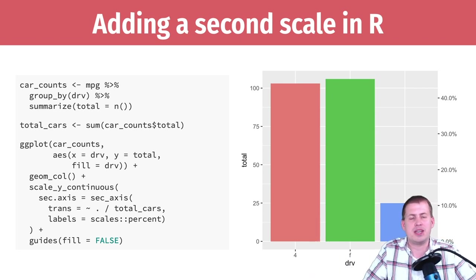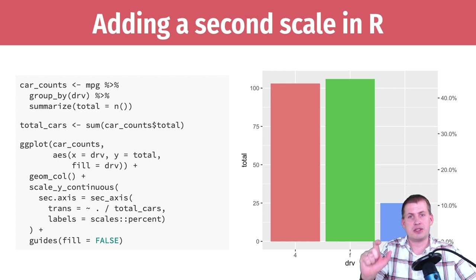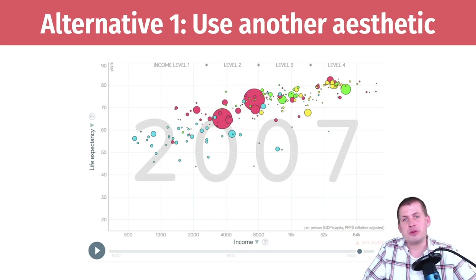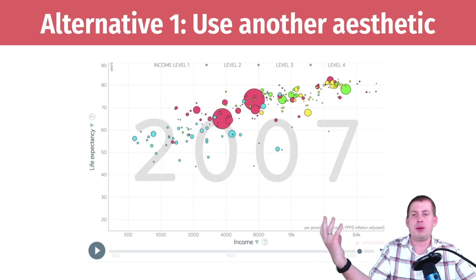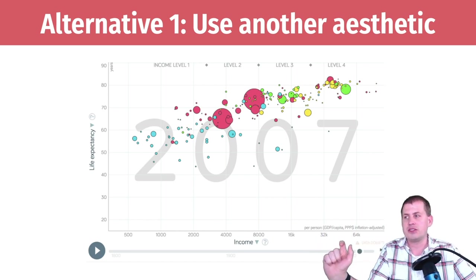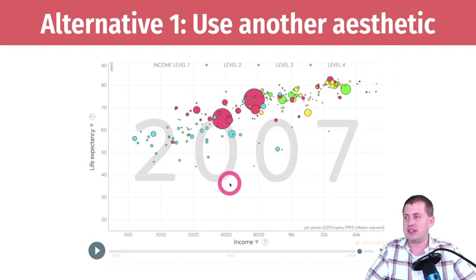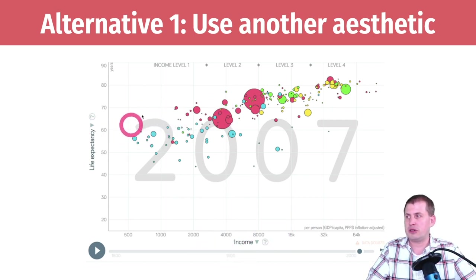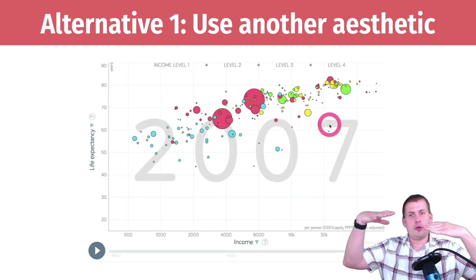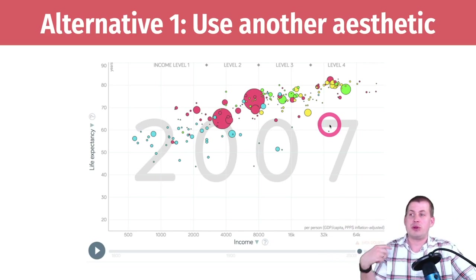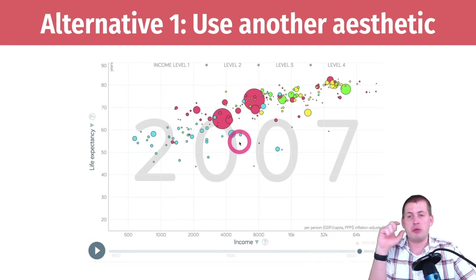If you can't add a second scale because it's a totally different variable and not a linear transformation, there are other ways of showing multiple variables on a plot. The nice thing about the grammar of graphics is you can map different variables onto different aesthetics. The Gapminder data set is a great example: health, wealth, and population are all shown. They could have added a second y-axis for population, but instead they encoded population as size and other variables as color — far more interpretable than four different lines with four different y-axes.